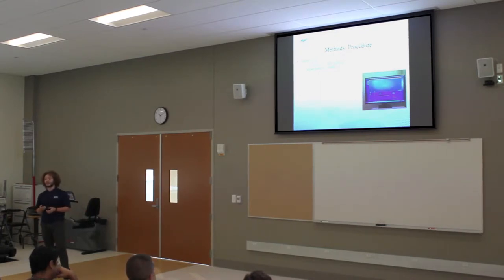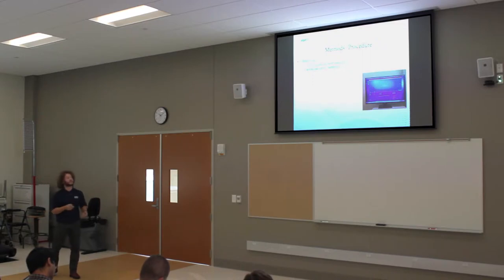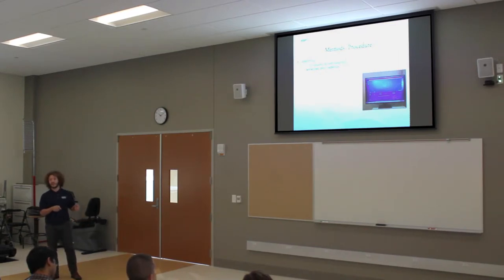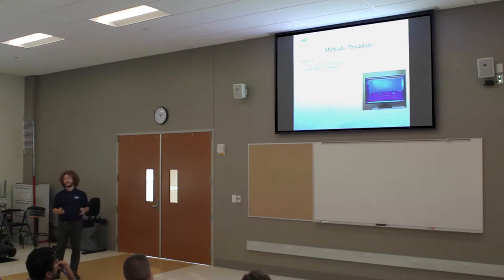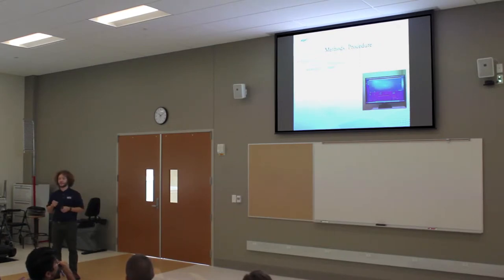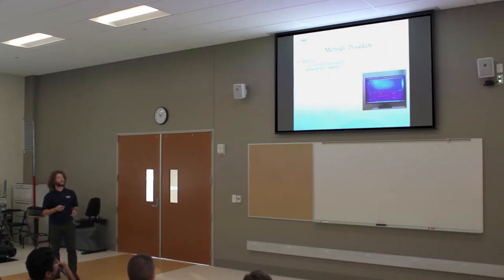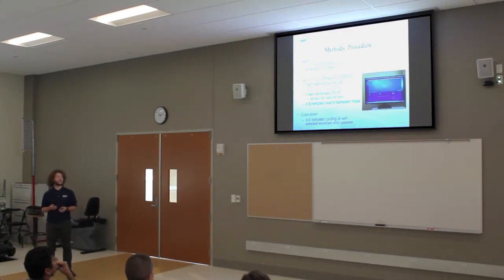Once the bike fit was done, participants did a three-to-five minute warmup at a self-selected workload and cadence. During this time we familiarized them with the Velotron display — a blue screen where a dark blue triangle moved up when they pedaled faster and down when slower. Since all conditions were at a fixed cadence, they had to maintain it at the middle, deviating no more than one tick above or below, with each tick representing one revolution per minute. After the warmup, the pedaling conditions began — six three-minute conditions — followed by a three-to-five minute cool down.